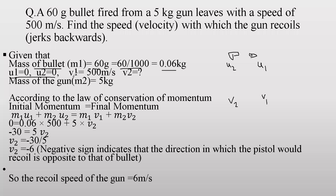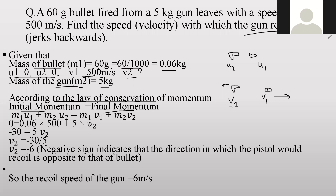After firing, the bullet moves with velocity v1. The gun experiences a recoil velocity v2, which we need to find. The mass of the gun is 5 kg. Applying the law of conservation of momentum: m1u1 + m2u2 = m1v1 + m2v2. Since u1 and u2 are both zero, the left-hand side is zero.